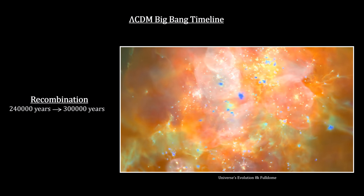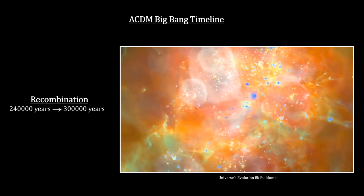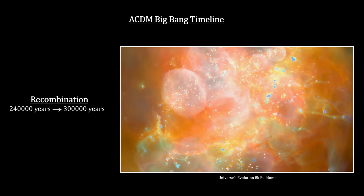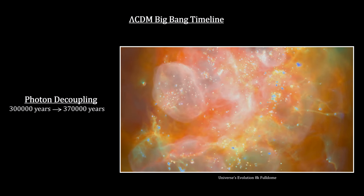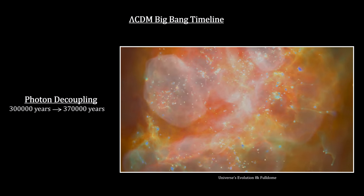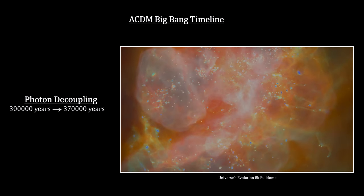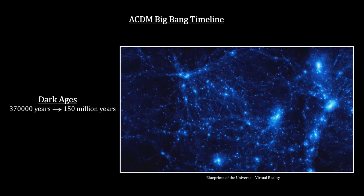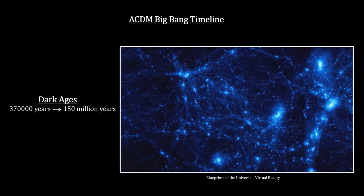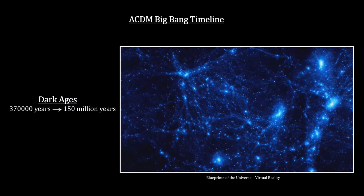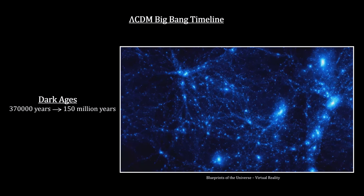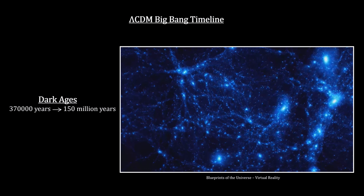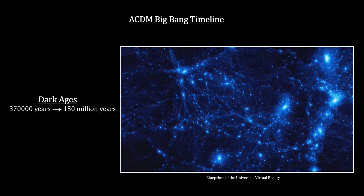Recombination, from 240,000 to 300,000 years, is when electrons reunited with protons, creating a sea of hydrogen and helium atoms. Photon decoupling, from 300,000 to 370,000 years, is when photons were freed to travel across the universe. And the dark ages, from 370,000 to 150 million years, is when the sky darkened as the expanding universe stretched the bright surface of last scattering radiation into the infrared range. During this time, the caustic process worked dark matter into filaments, with the baryonic matter — hydrogen and helium — tagging along.